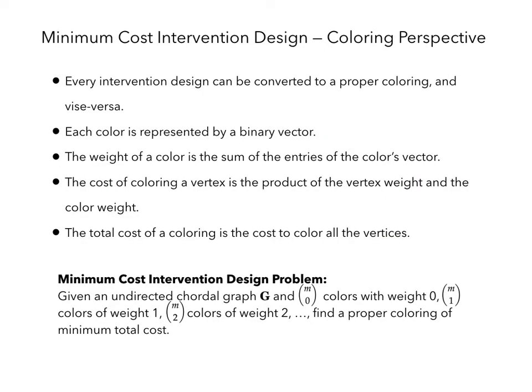Every intervention design can be converted to a proper coloring, and vice versa. Each color is represented by a binary vector. The weight of a color is the sum of the entries of this vector. The cost of coloring a vertex is the product of the vertex weight and the color weight, and the total cost of a coloring is the cost to color all the vertices. We will use this perspective when creating algorithms for the minimum cost intervention design problem.